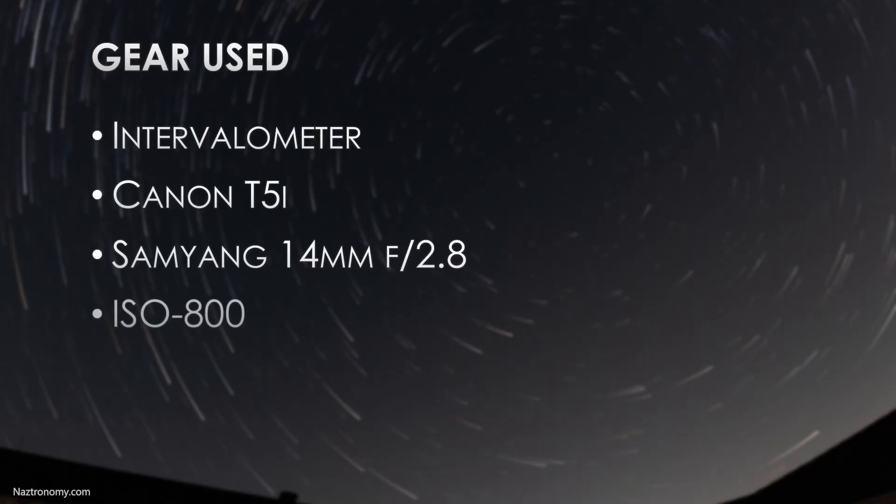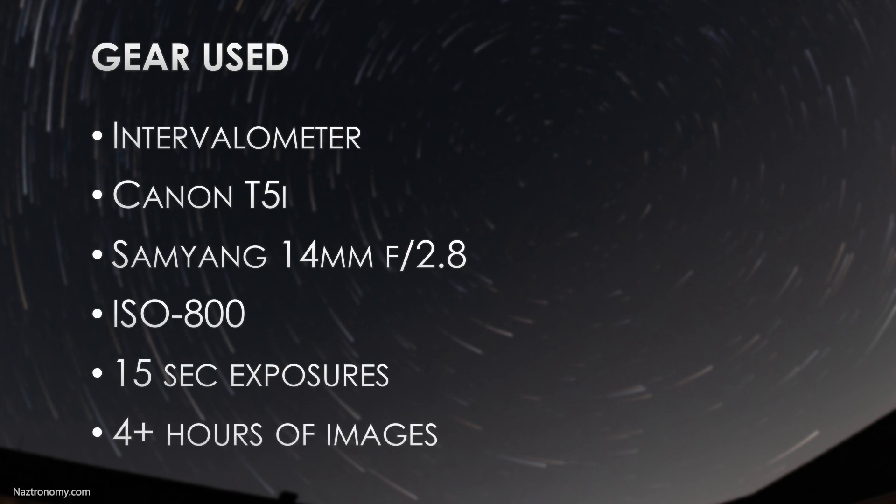For my settings, I'm using ISO 800. I took 15-second exposures controlled with my intervalometer, and I took more than a thousand pictures totaling more than four hours. All my images were taken from a friend's backyard near Hartford, Connecticut.